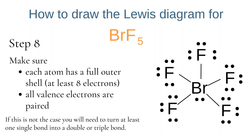We add the remaining 2 electrons as a lone pair to our central bromine atom. Finally, we check that our Lewis diagram is correct. Each fluorine atom has a total of 8 electrons around it, and each electron is found as a pair — either a lone pair or a bonding pair — so the surrounding atoms are stable. Bromine has 12 electrons around it: 5 as bonding pairs and 1 as a lone pair, so it too is stable. Our Lewis diagram is correct.